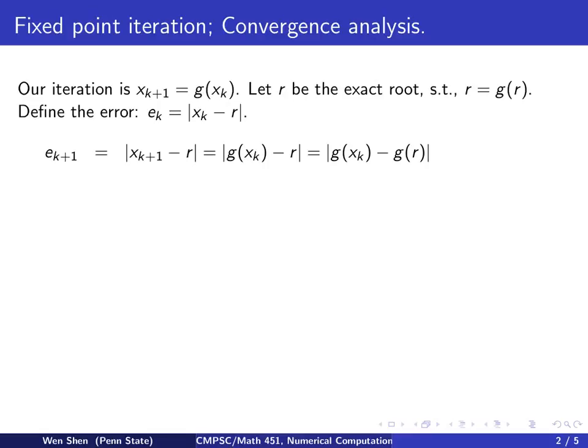That is, how the error e_{k+1} depends on the error e_k. So e_{k+1} will be |x_{k+1} - r|. That's our guess at k+1 iteration, and this is computed as g(x_k).